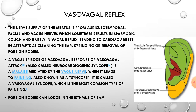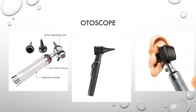The vasovagal reflex is important: the nerve supply of the meatus from the auriculotemporal, facial, and vagus nerves can sometimes result in spasmodic cough and rarely a vagal reflex leading to cardiac arrest during attempts at cleaning the ear, syringing, or removal of foreign bodies. This is called a vasovagal episode, vasovagal response, vasovagal attack, or neurocardiogenic syncope. An otoscope is the instrument used to examine the ear.